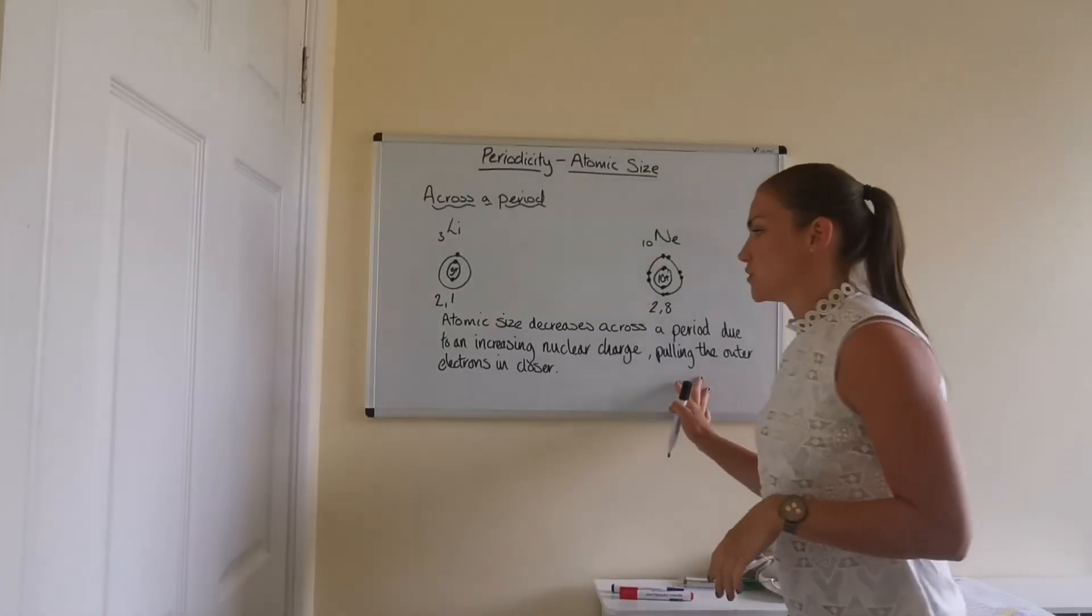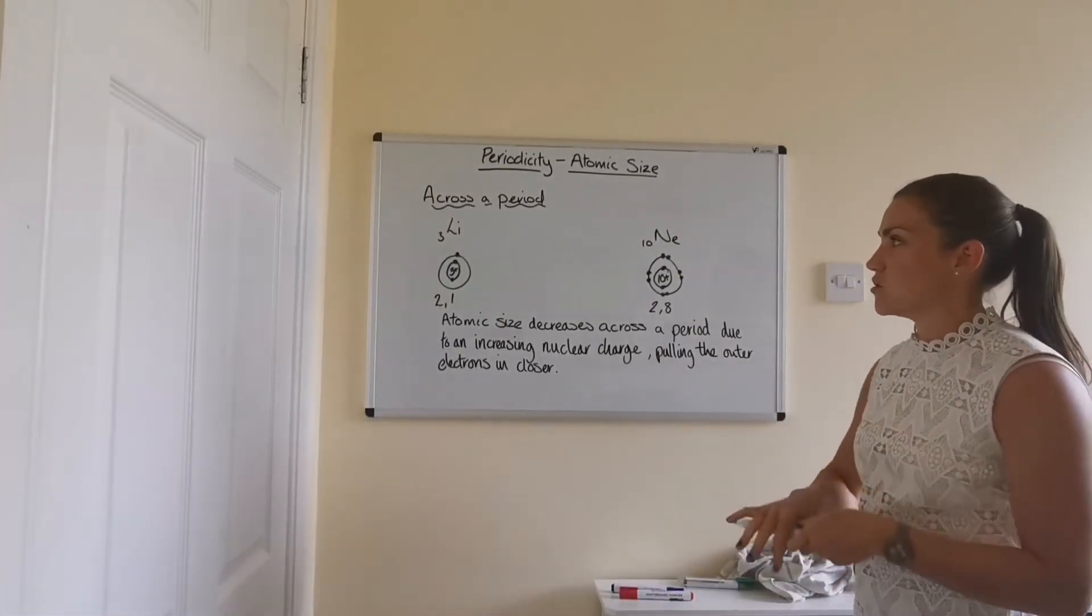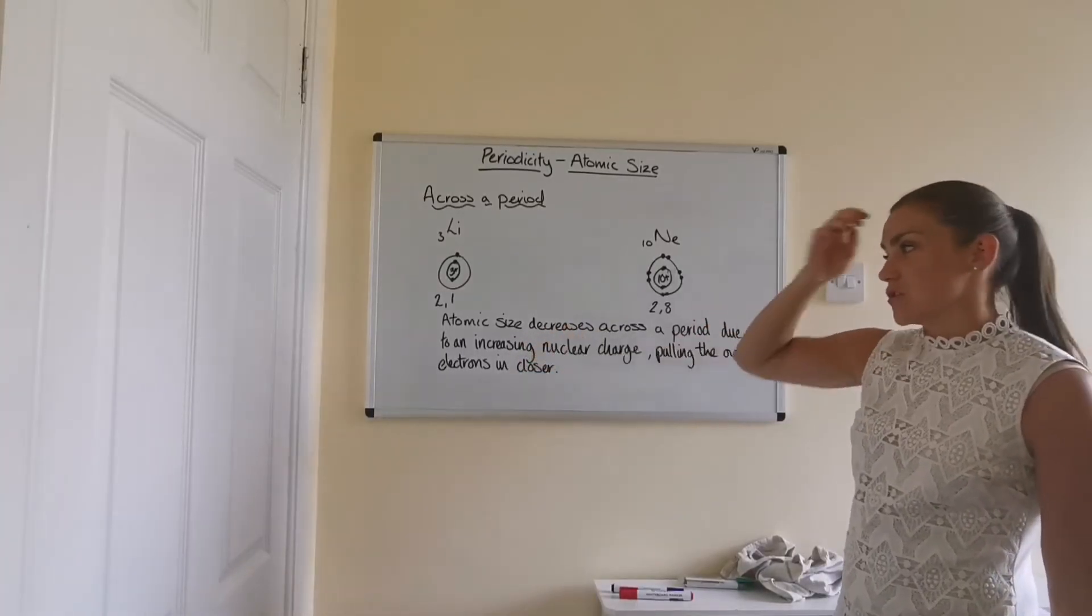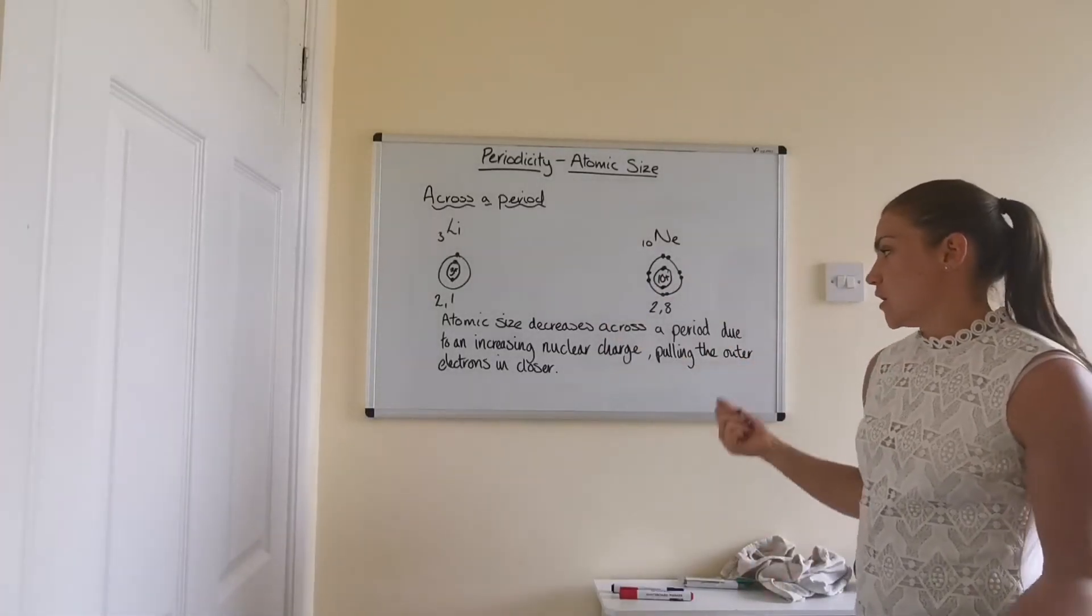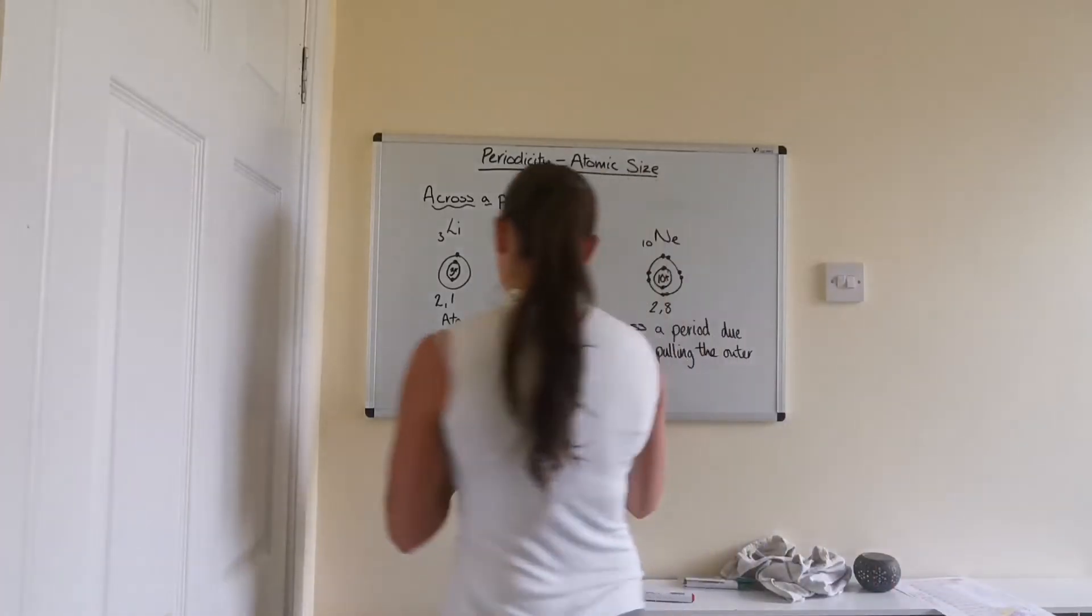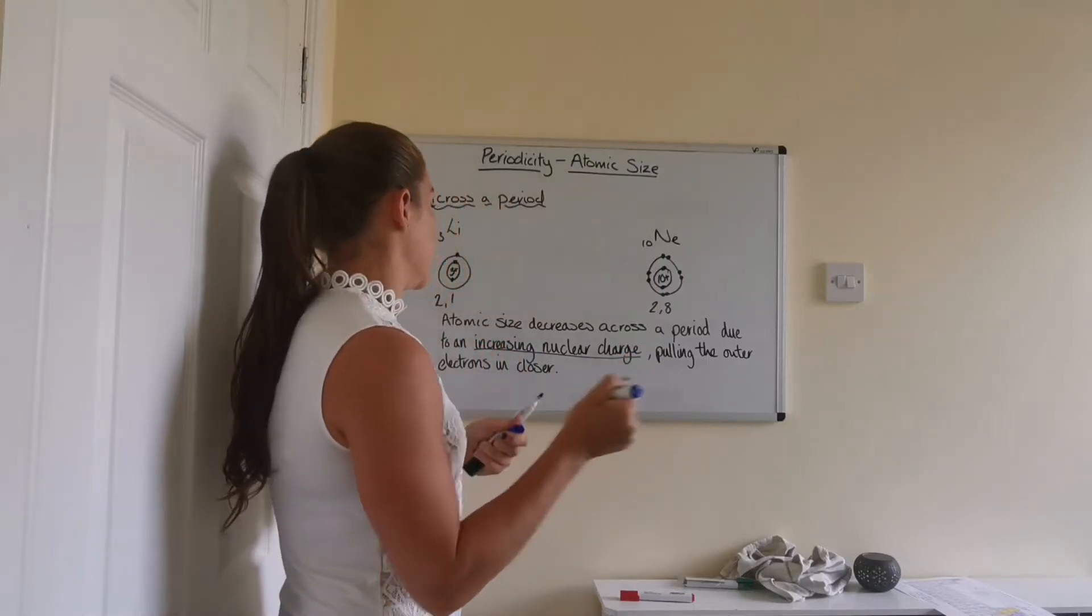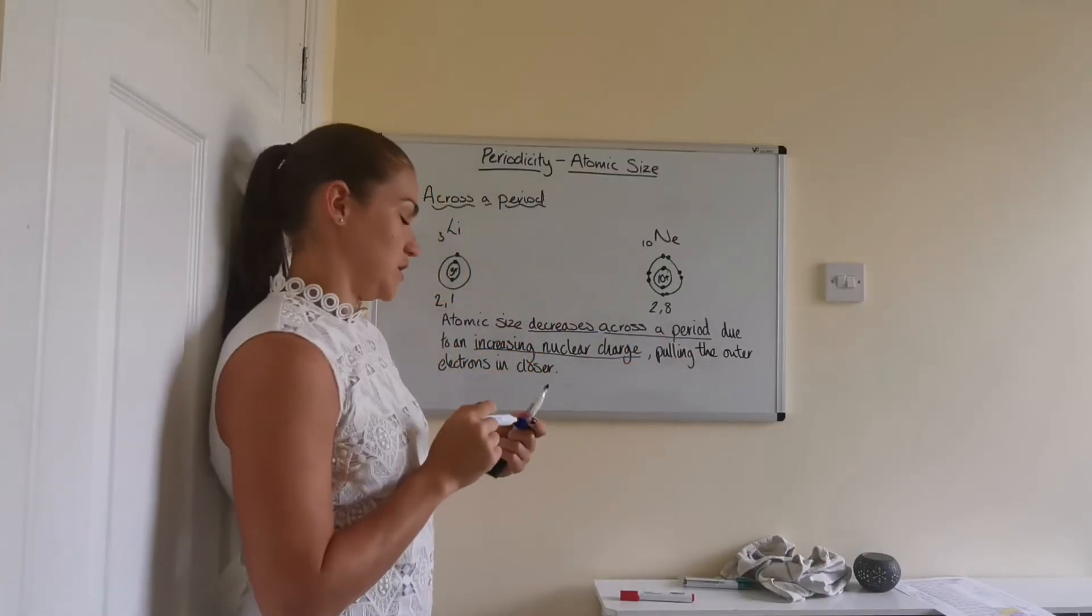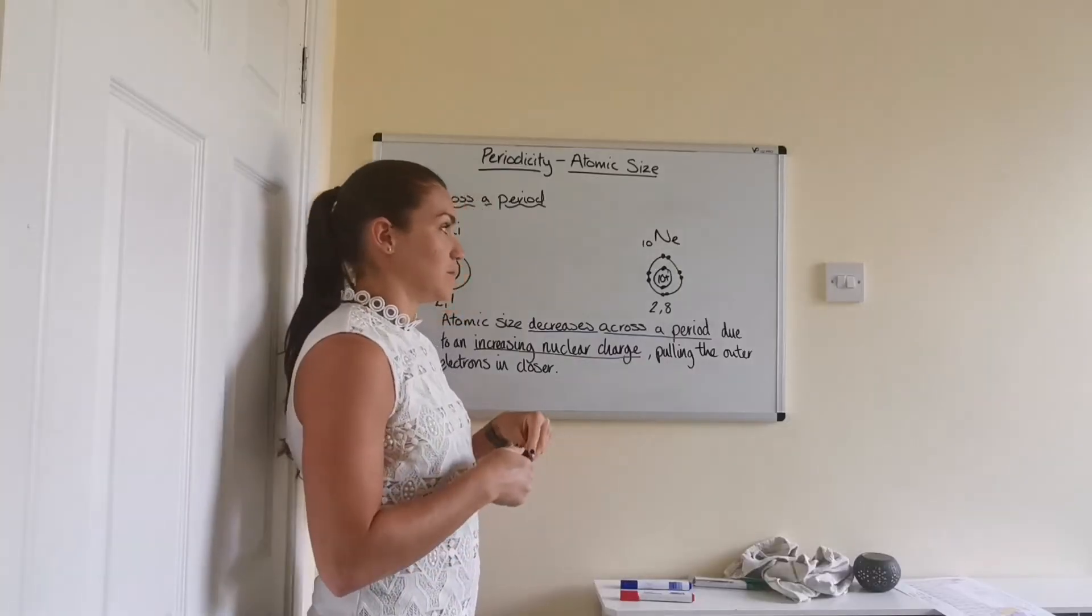So we would write this in any explanations we were giving for the pattern that we're seeing across the period in atomic size. We would explain that atomic size decreases across the period due to an increasing nuclear charge pulling the outer electrons in closer. It's the increasing nuclear charge bit that's important here. So the atomic size decreases across a period due to an increasing nuclear charge.